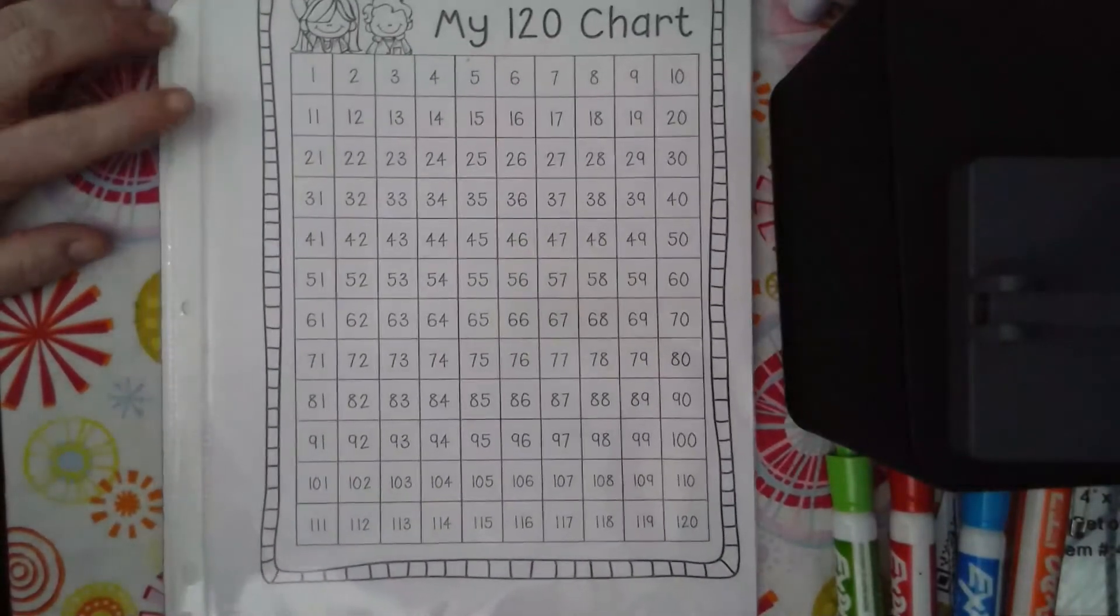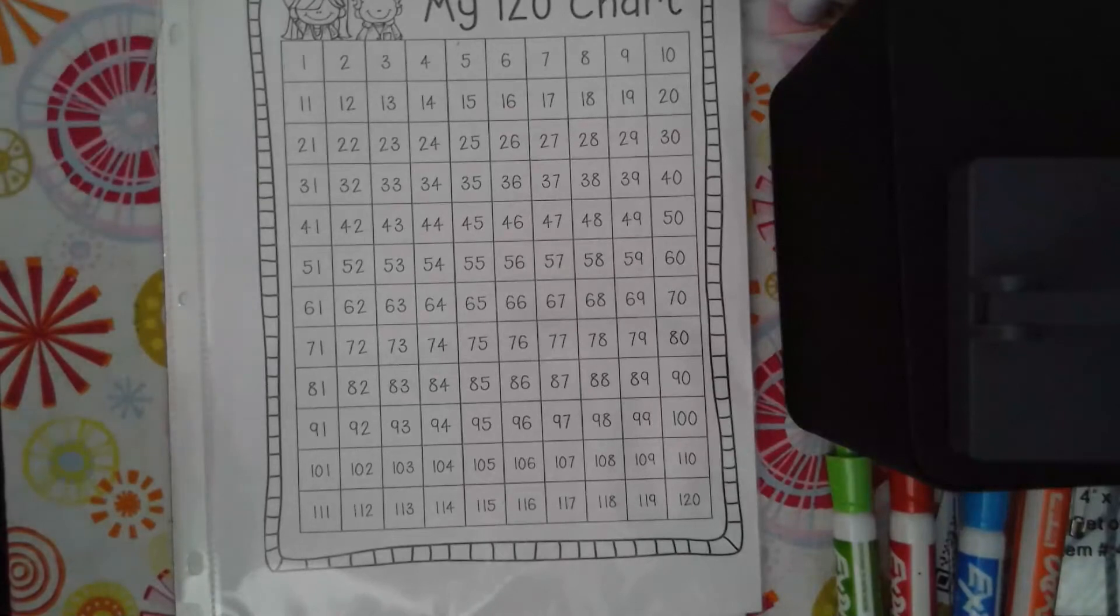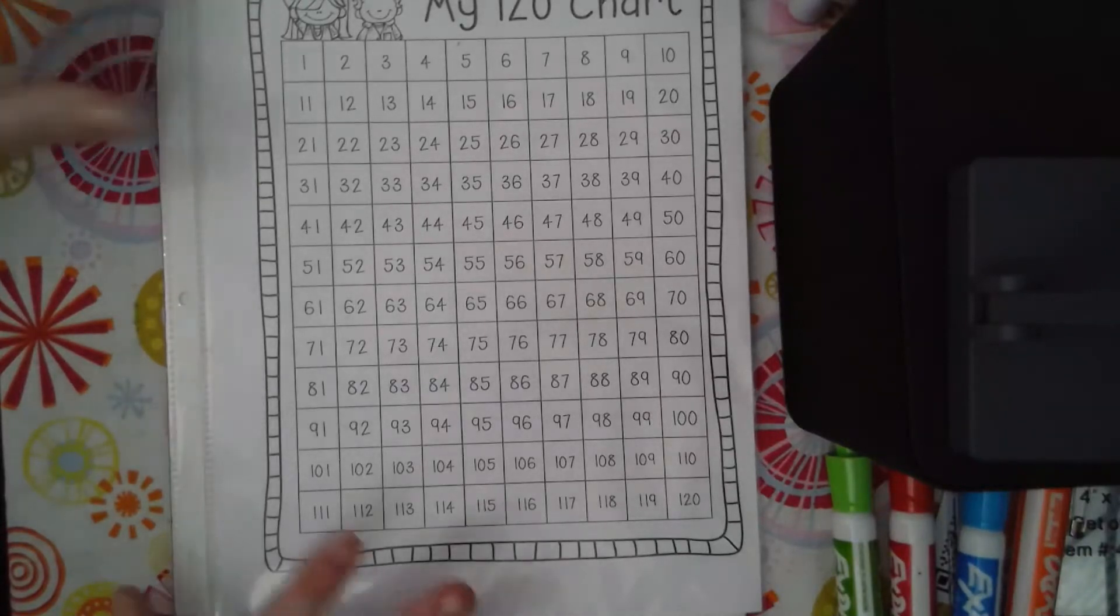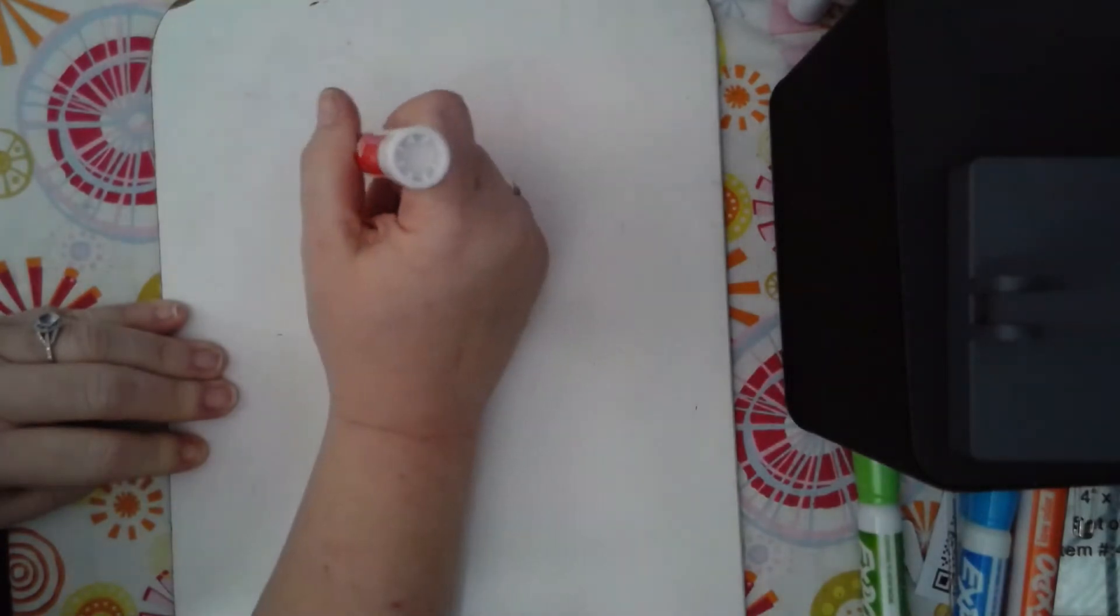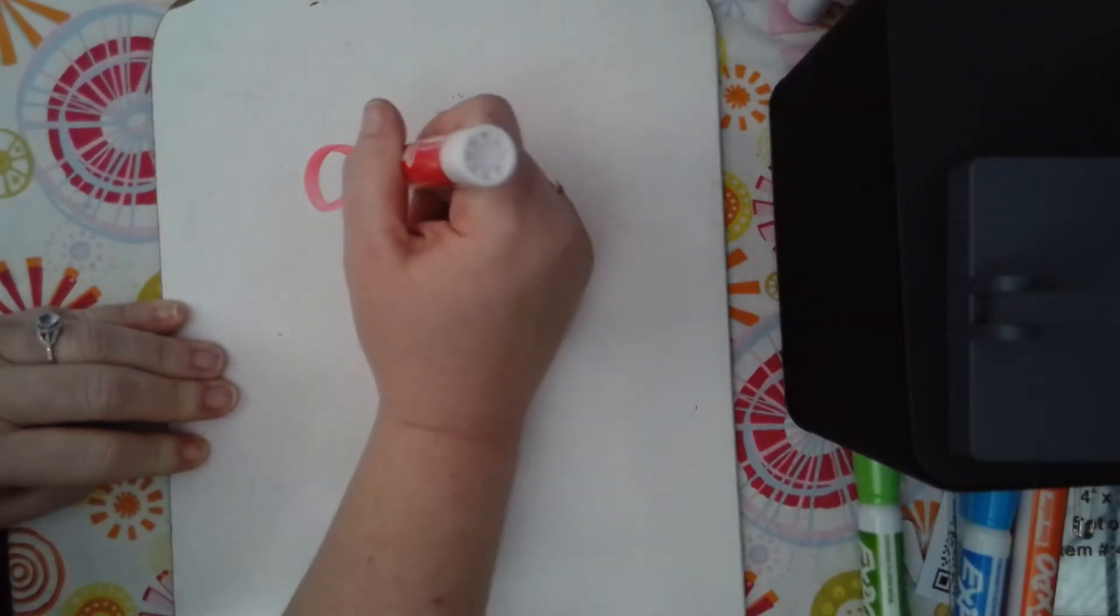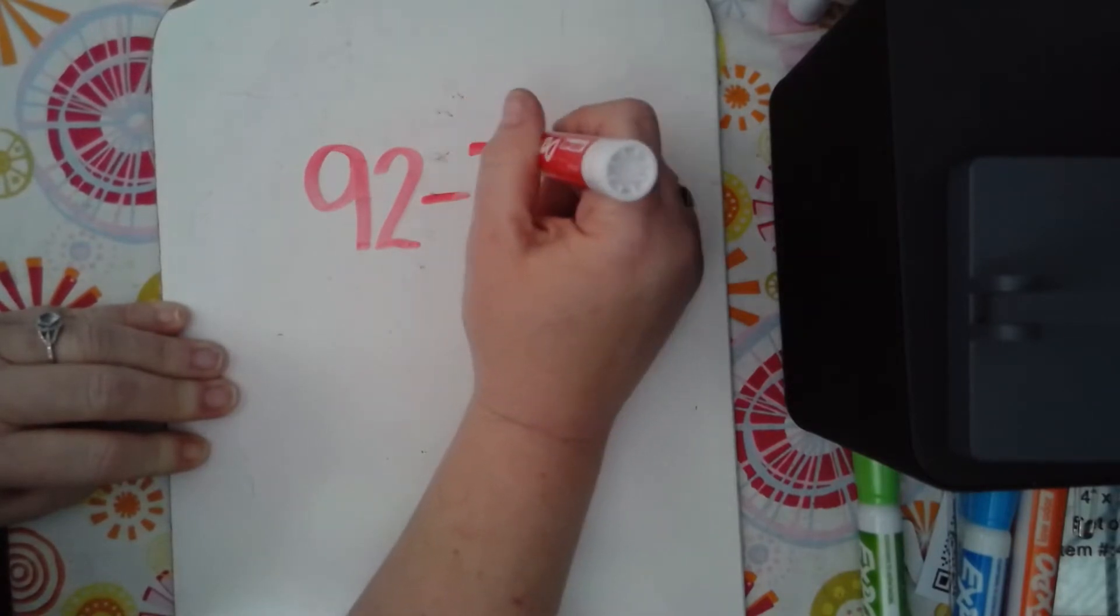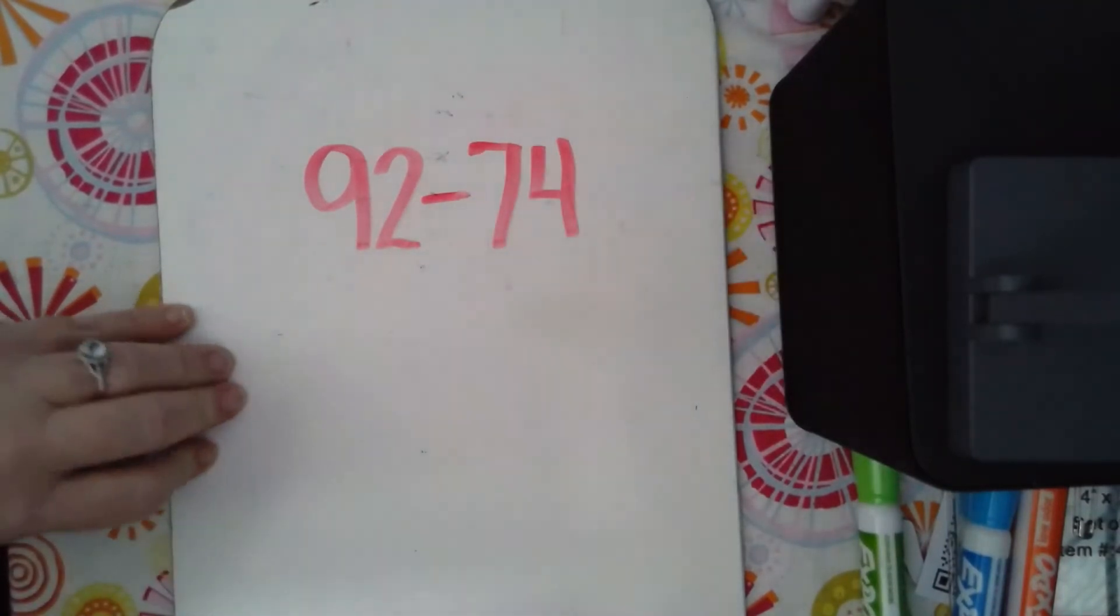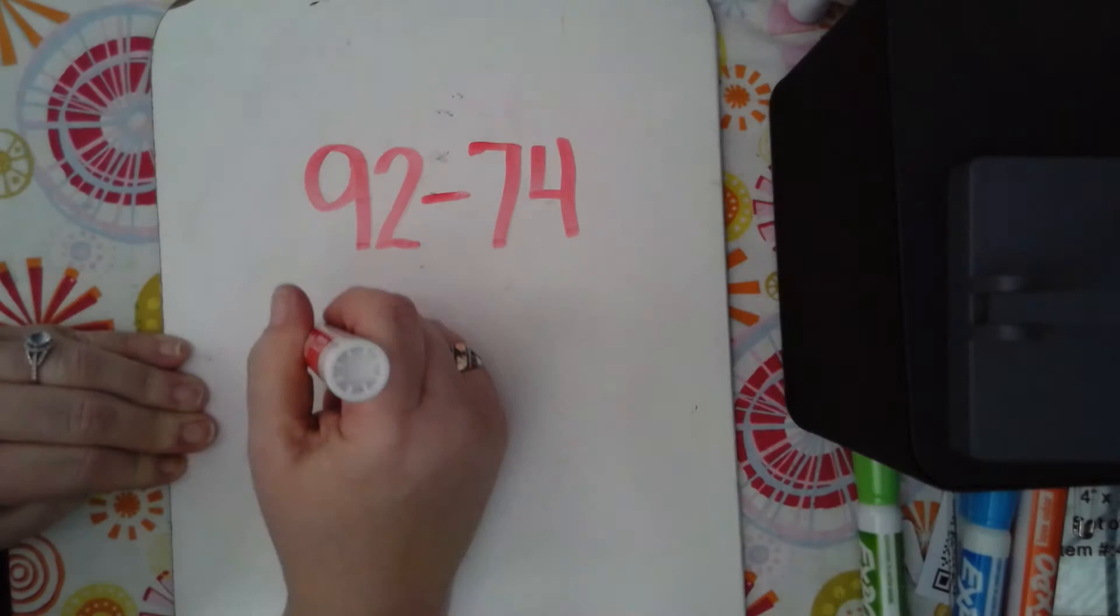In this video we're going to talk about using addition to check your subtraction. So let's look at a problem here. Let's do 92 take away or minus 74. I'm going to start with a model. I'm going to model 92.